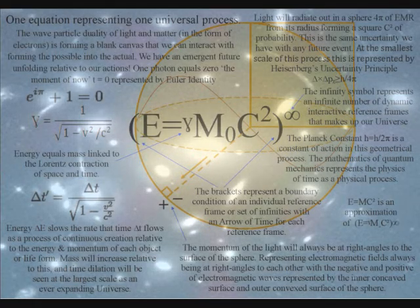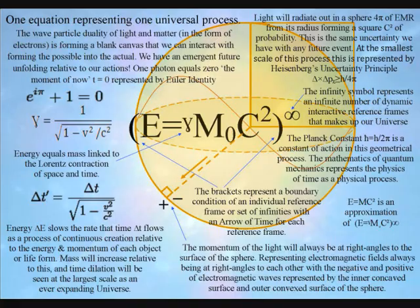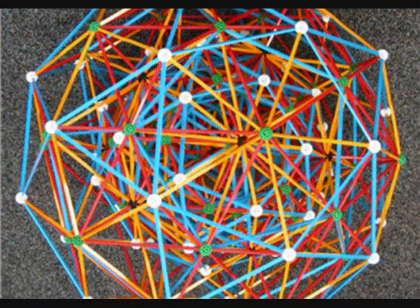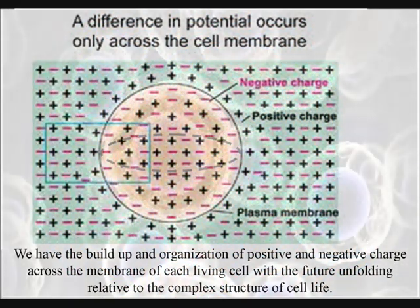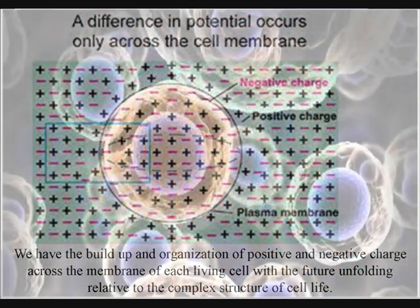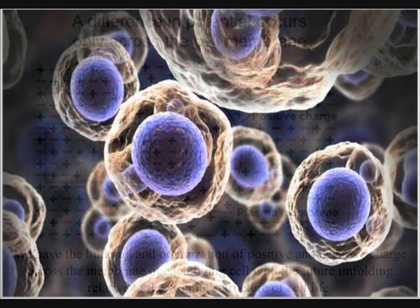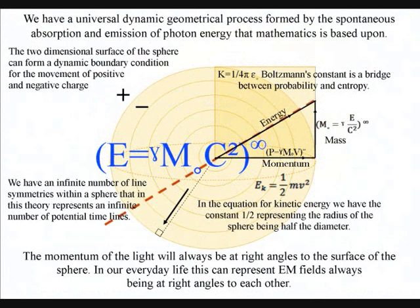This is explained as a process of spherical symmetry forming and breaking that forms the potential for ever more abstract mathematics and also forms the potential for the ever increasing complexity and diversity of cell life. If this is true we should be able to take the interconnected nature of mathematics and follow it back to the original spherical geometry of this process.